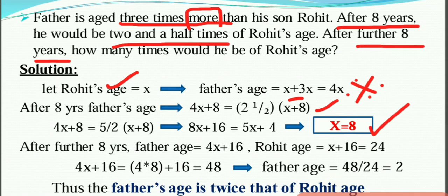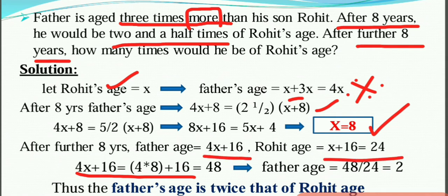If you take x equal to 8, father's age now is 4x. After a further 8 years: 4x plus 16. Substituting x equals 8: father's age equals 4 times 8 plus 16, which is 48. Son's age is 8 plus 16, which is 24. So father's age is 48 and son's age is 24, meaning father is twice the son's age.